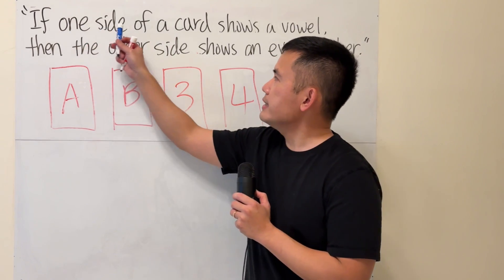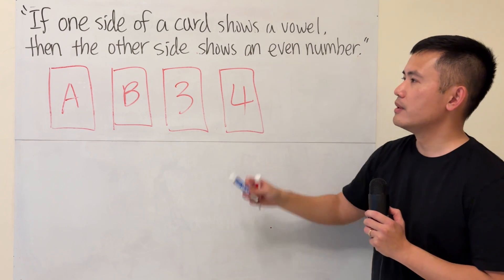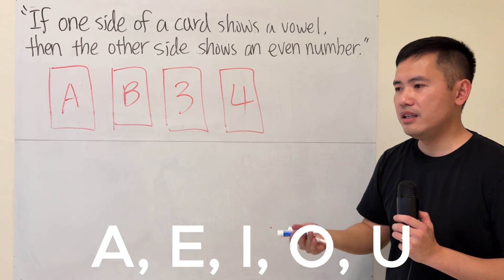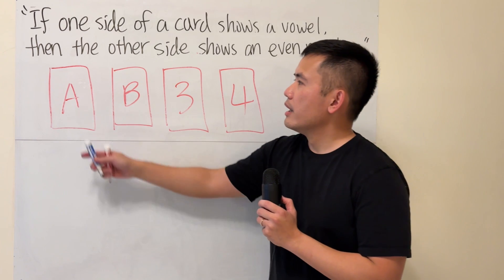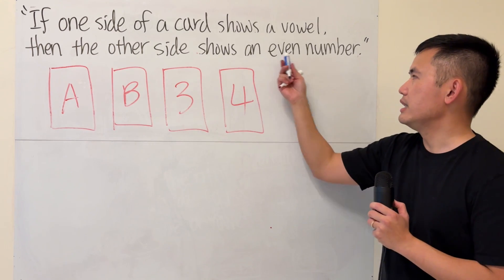If one side of a card shows a vowel, which is just the English alphabet A, E, I, O, U, then the other side shows an even number.